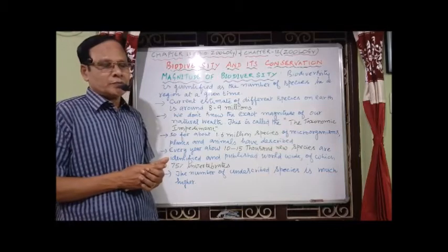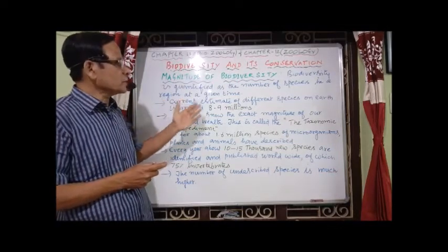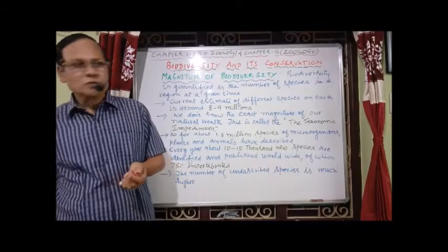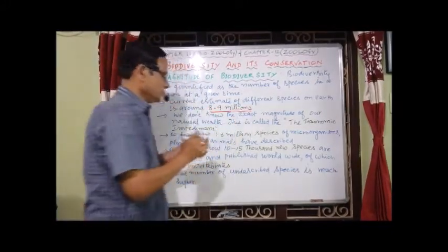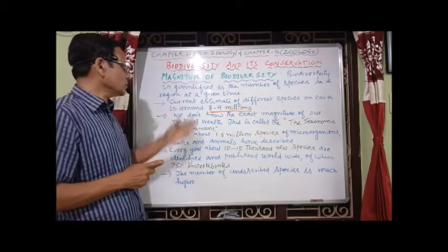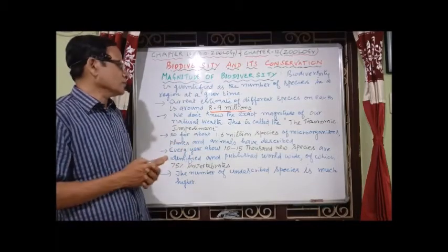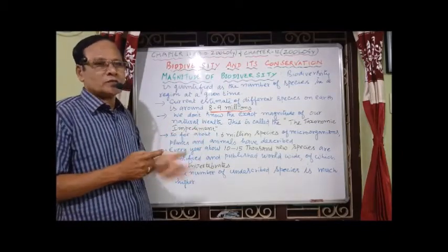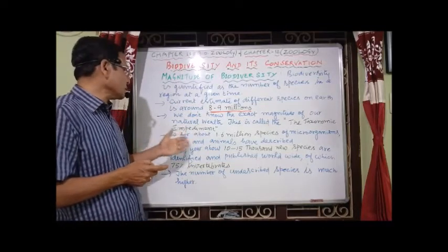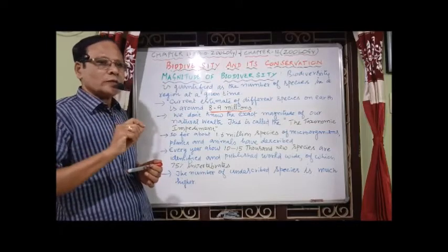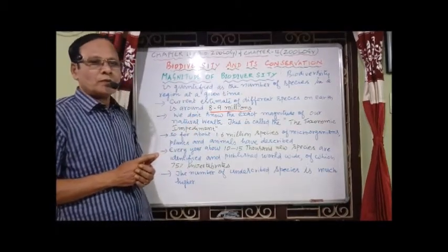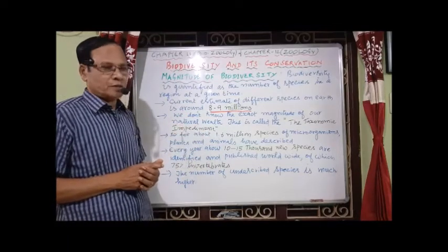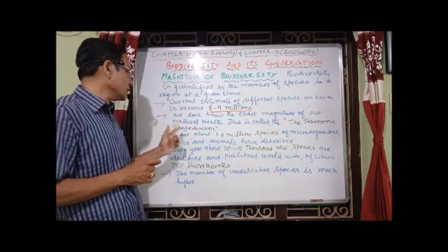The current estimate of different species on Earth is around 8 to 9 million. Actually, we do not know the exact magnitude — that is the exact size of our world's natural wealth. This is called the taxonomic impediment: not knowing the exact magnitude of our natural wealth.